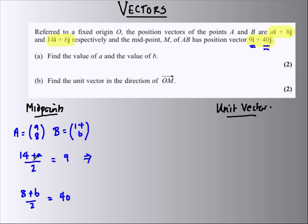I reckon this, 14 plus A is 18, A has got to be 4, and here, 8 plus B must be 80, so B must be 72, and that's our A and B.